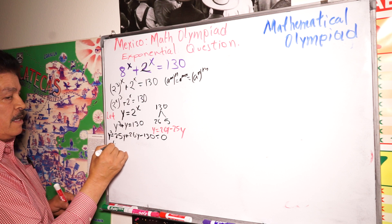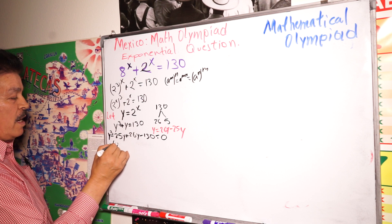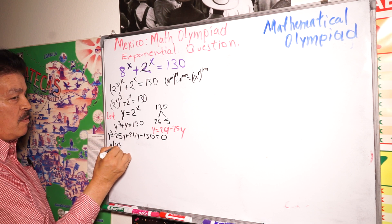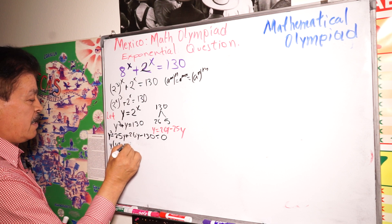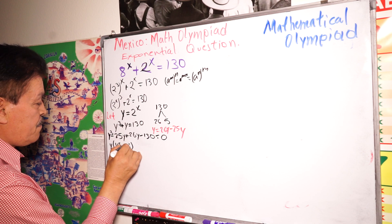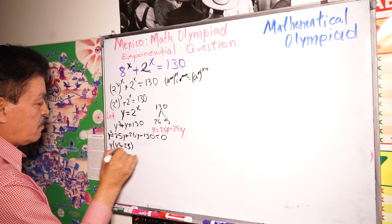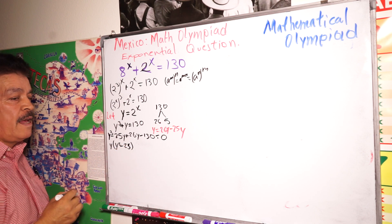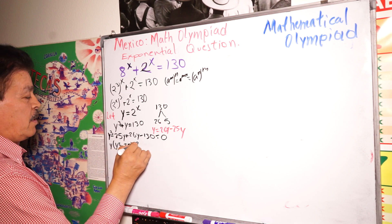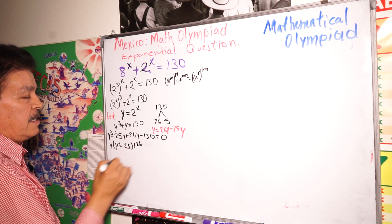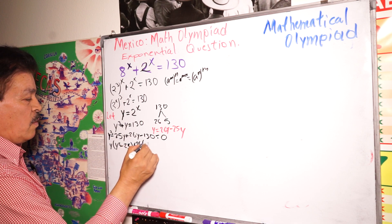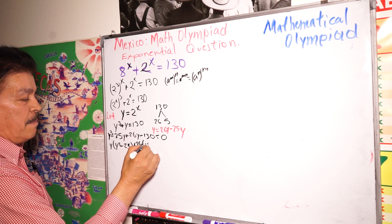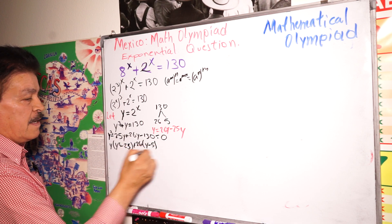Take out the common factor: Y times the quantity Y squared minus 25, plus 26 times the quantity Y minus 5.